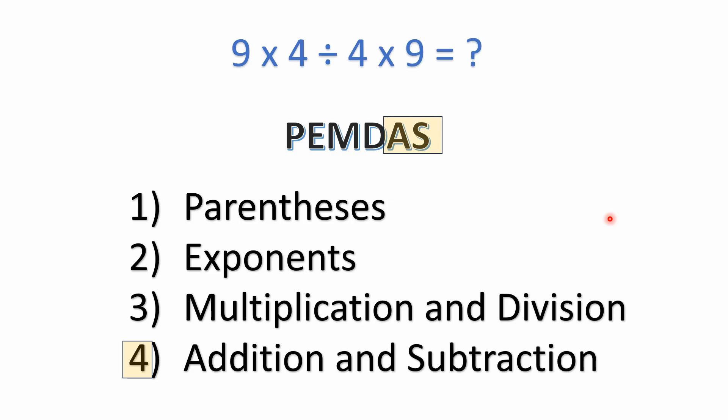And then finally we have addition and subtraction. Once again, addition and subtraction have equal precedence, so you're just solving those left to right. Subtraction is the same thing as adding a negative number, so there's really no difference. They have equal precedence.